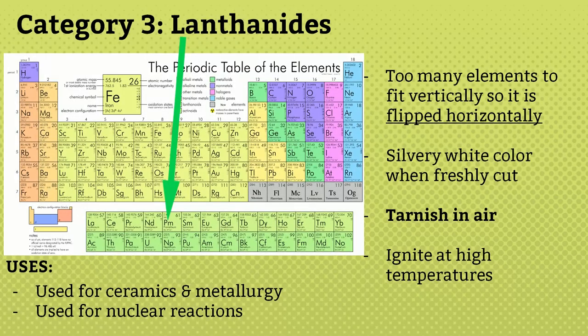Category 3: they are lanthanoids, placed separately below the periodic table because there are too many elements to fit vertically, so they are arranged horizontally. They are silvery-white when freshly cut, tarnish in air, ignite at high temperatures, and are radioactive. They are used for ceramics, metallurgy, and some elements are used in nuclear reactions.